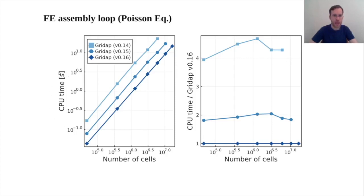Here, I'm showing the CPU time needed to assemble a linear system for the Poisson equation versus problem size. And as you can see, we have been reducing CPU times. And if you compare the version we presented in last year's JuliaCon with respect to the latest GridApp version, we have achieved more than a factor 4 of improvement, which I believe is quite significant.